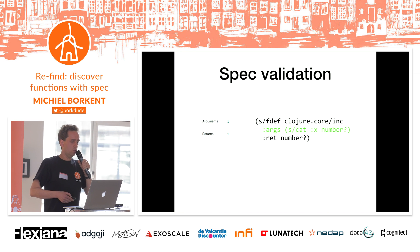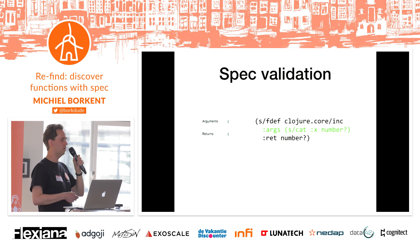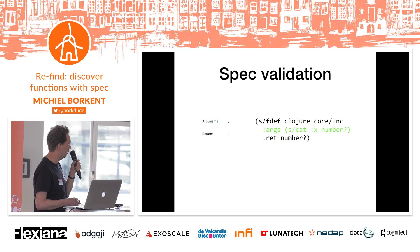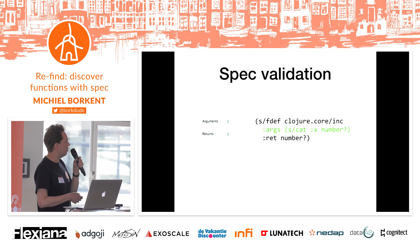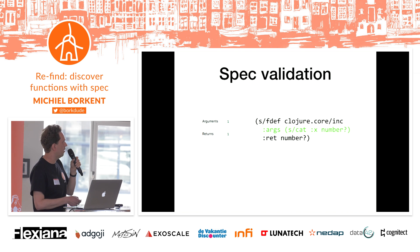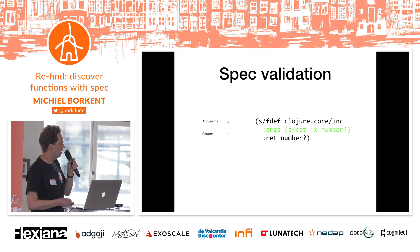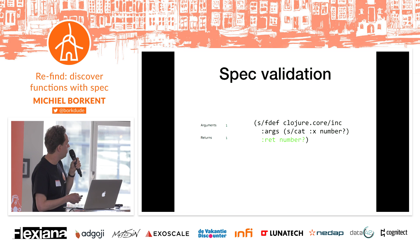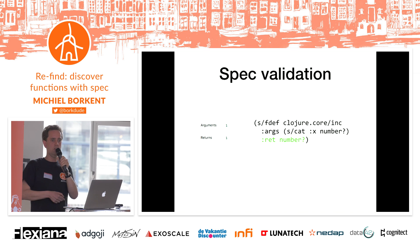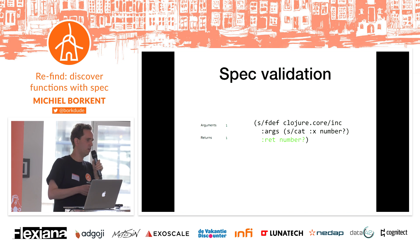So how does this work? For example, we have the number one as argument and we want to have the number one back. We walk through all the specs that we have for functions. Spec is a specification library for Clojure — you can write a specification for a function, like clojure.core/inc. You say cat — which means it's a sequence of things with names — and the argument x should be a number. One happens to be a number, so inc is still in the running to be recommended by ReFind. The return value is one and that's also still a number, so inc is still a possible candidate.